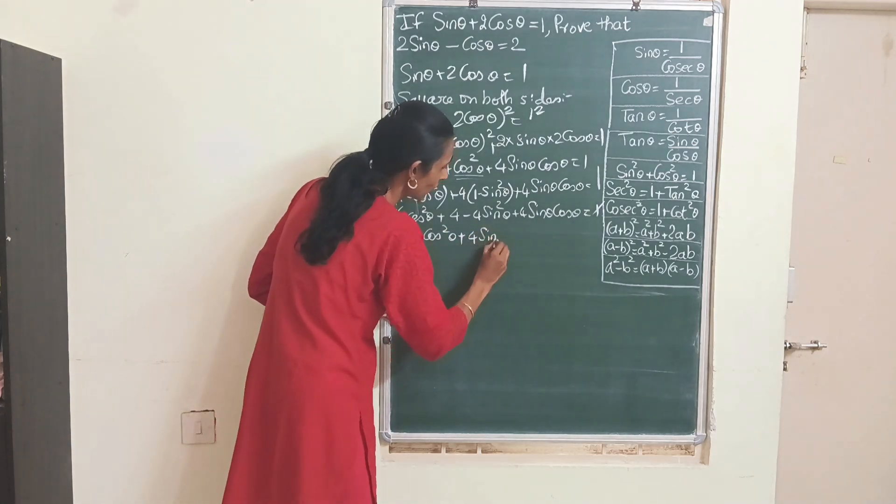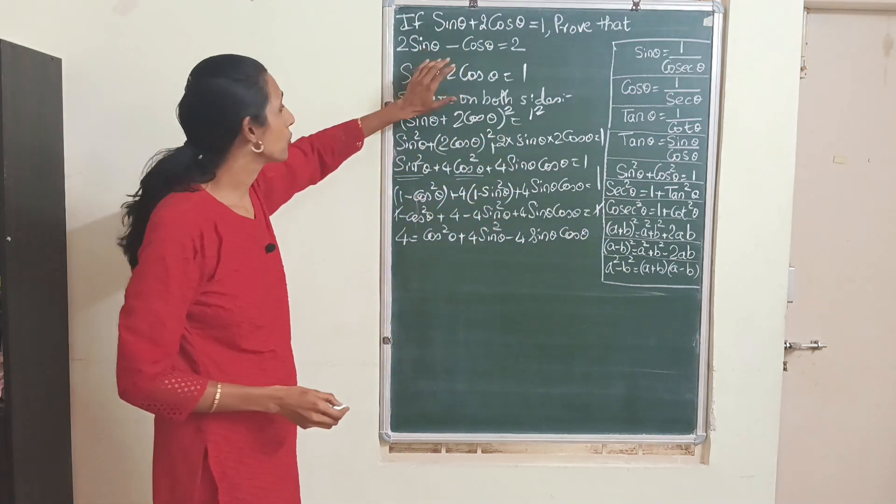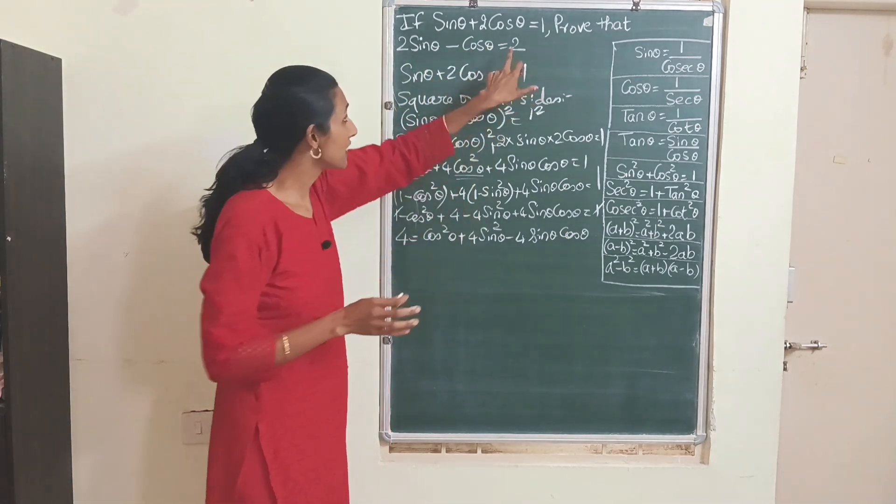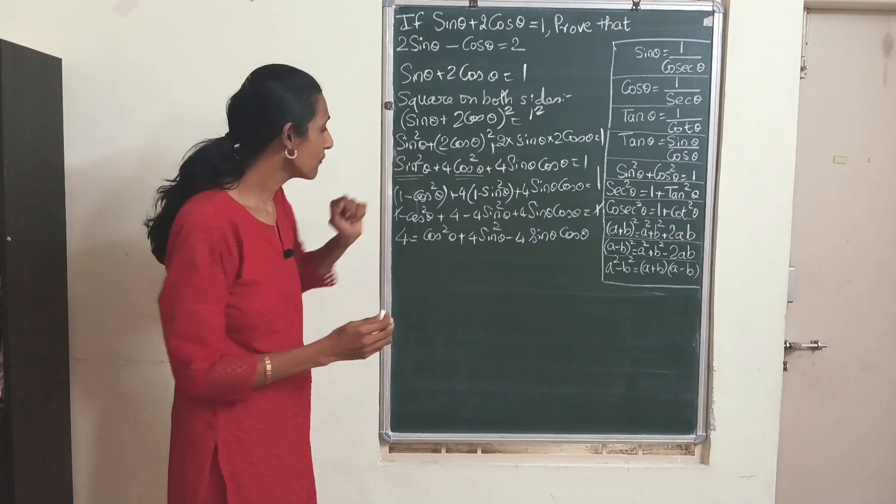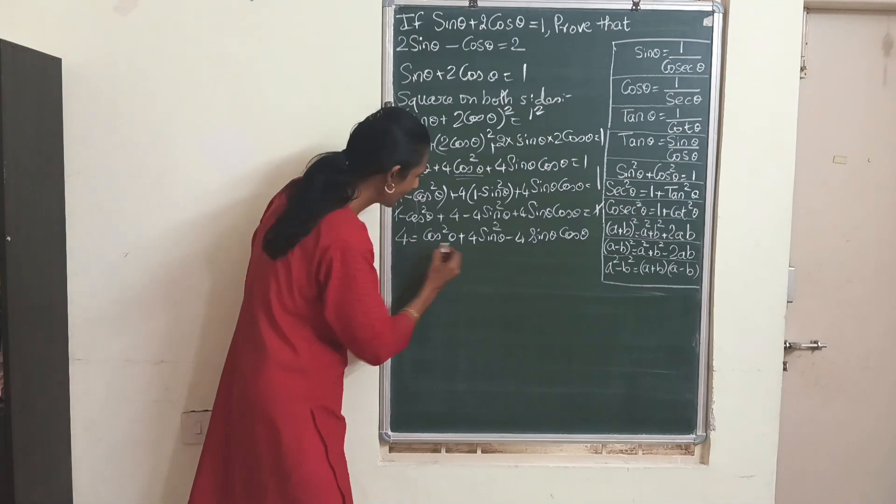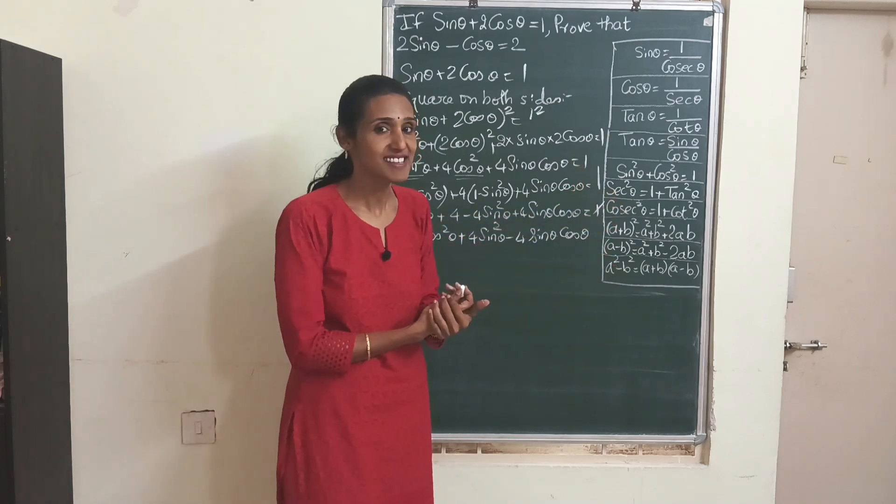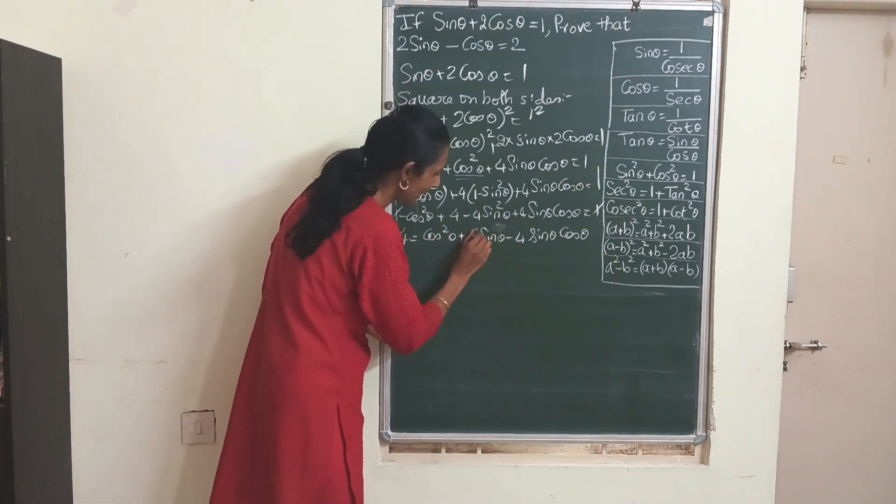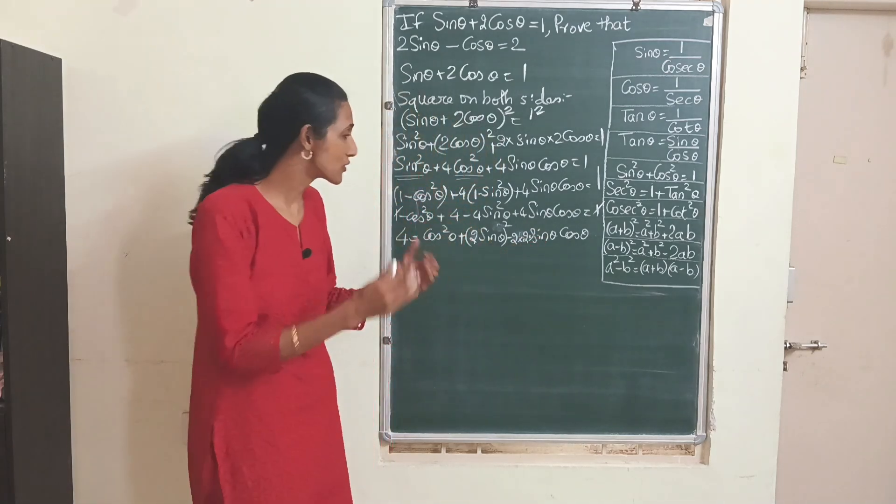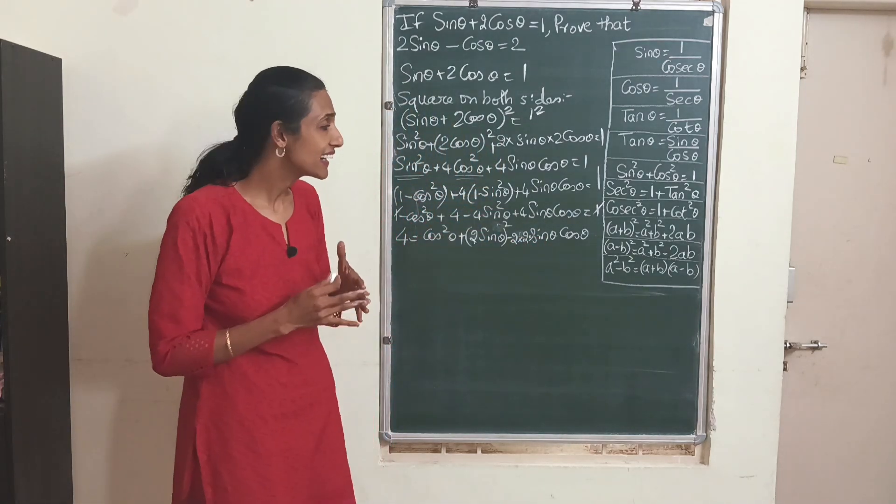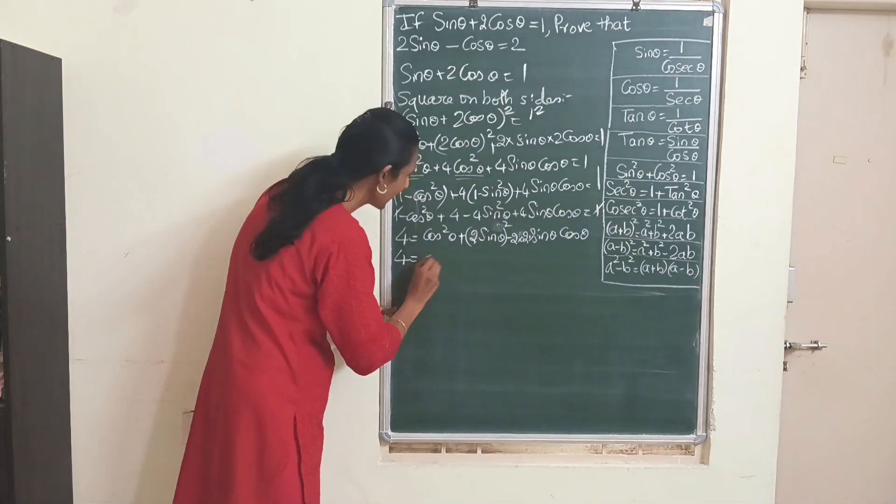We'll get cos² θ plus 4 sin² θ minus 4 sin θ cos θ equals 4. Why are we doing this? Because we have to prove 2 sin θ minus cos θ equals 2, so there is one number which is always on one side. Have a look at cos² θ plus 4 sin² θ and this term. What does this look like? 4 sin² θ I can always write as (2 sin θ)² and 4 sin θ cos θ as 2 times 2 sin θ times cos θ. See, 4 I have written as 2 into 2. Which identity does it look like? A minus B the whole square, the same thing which we have here. So I will write this is mine.